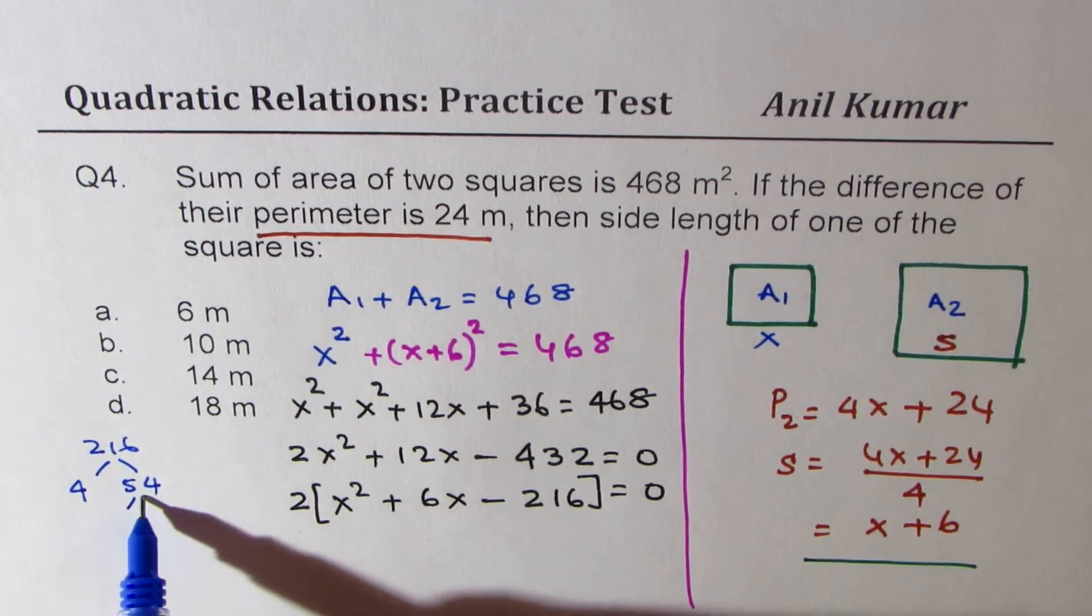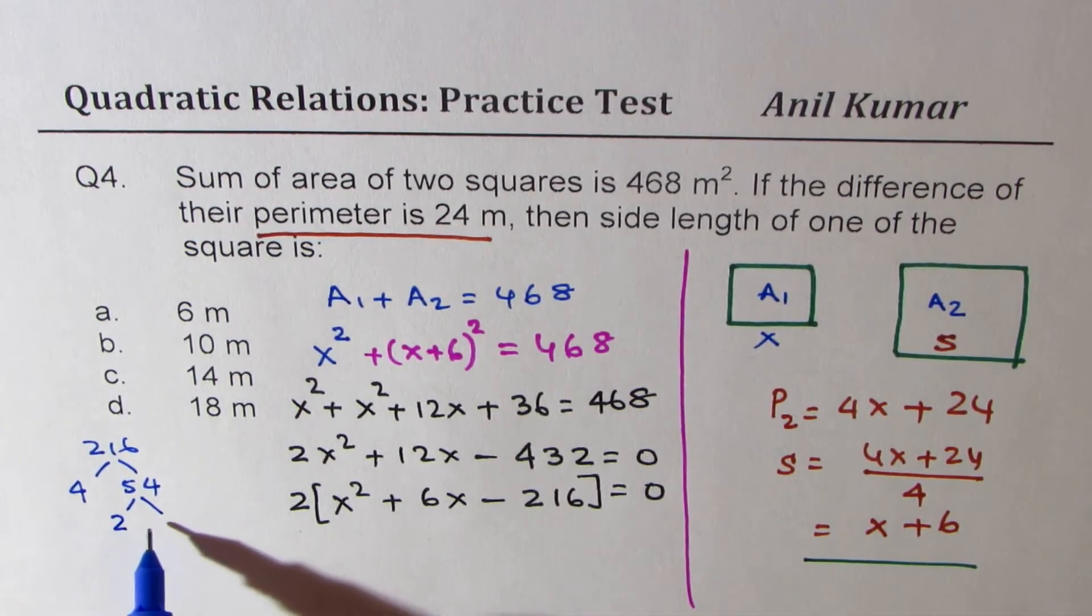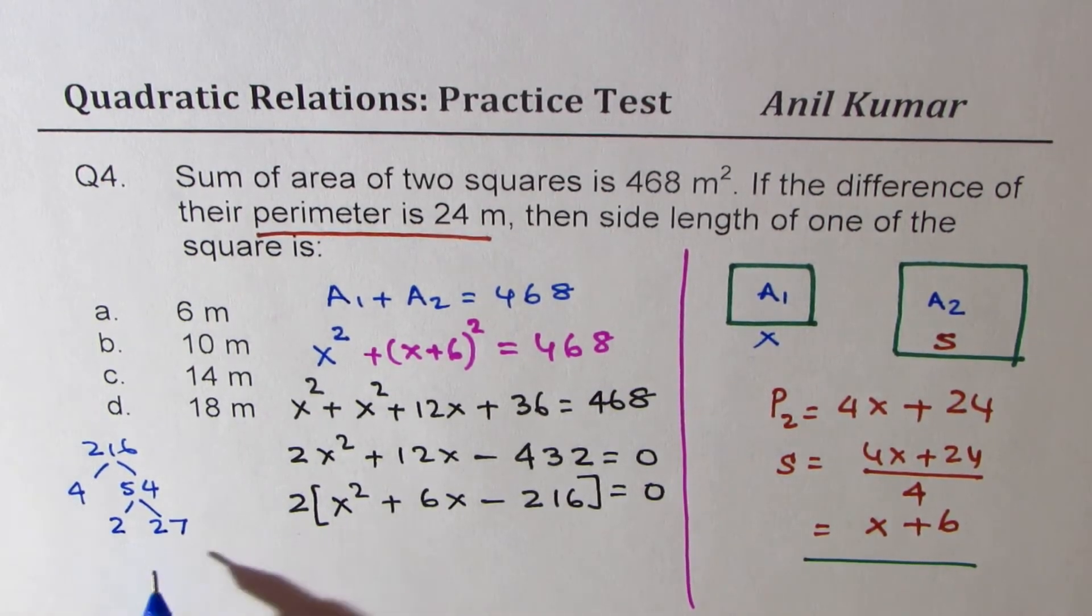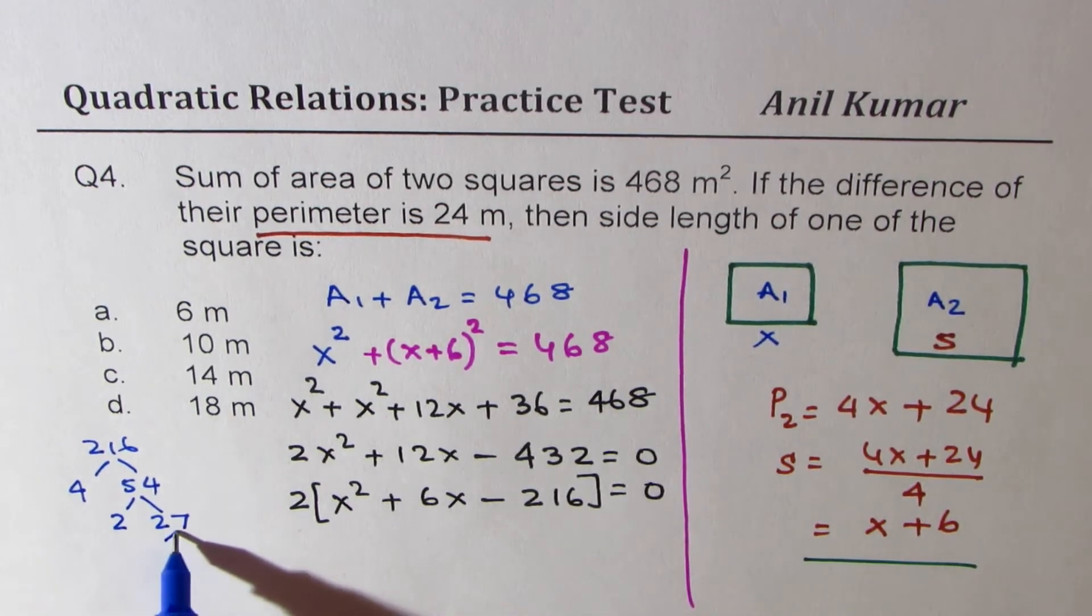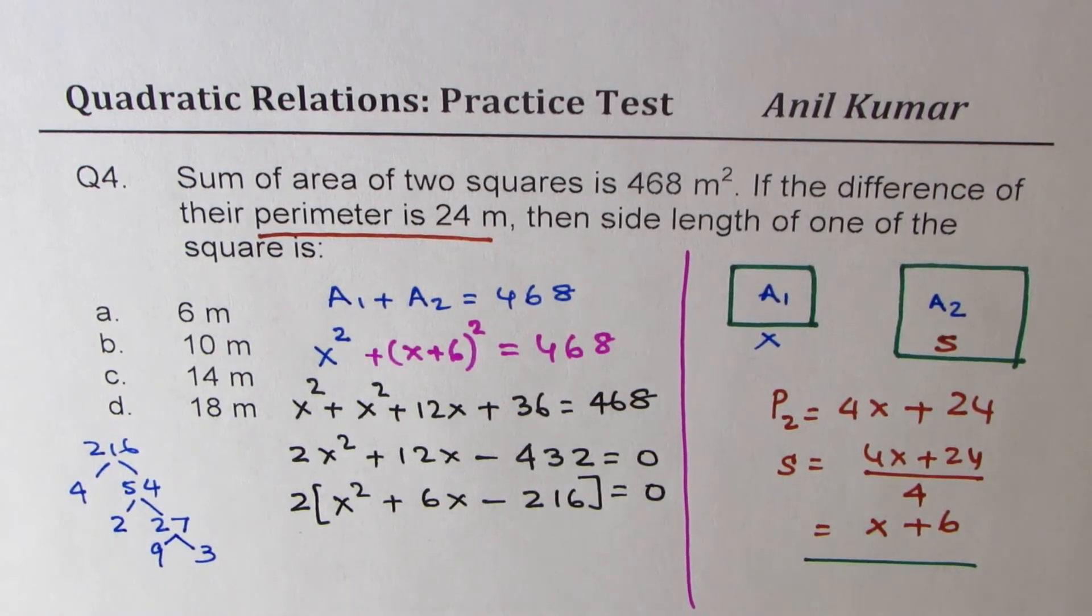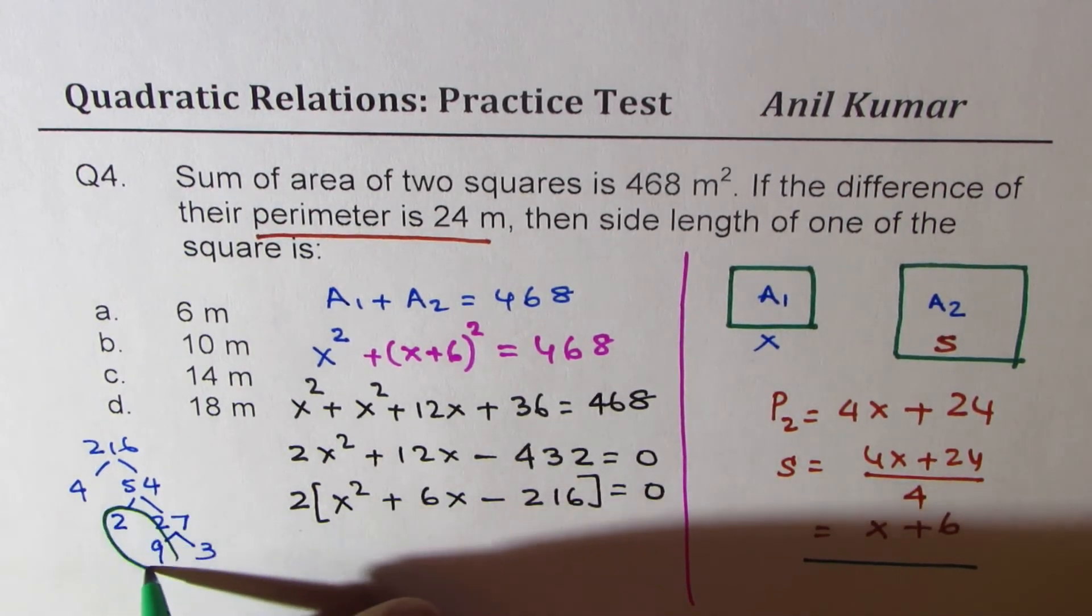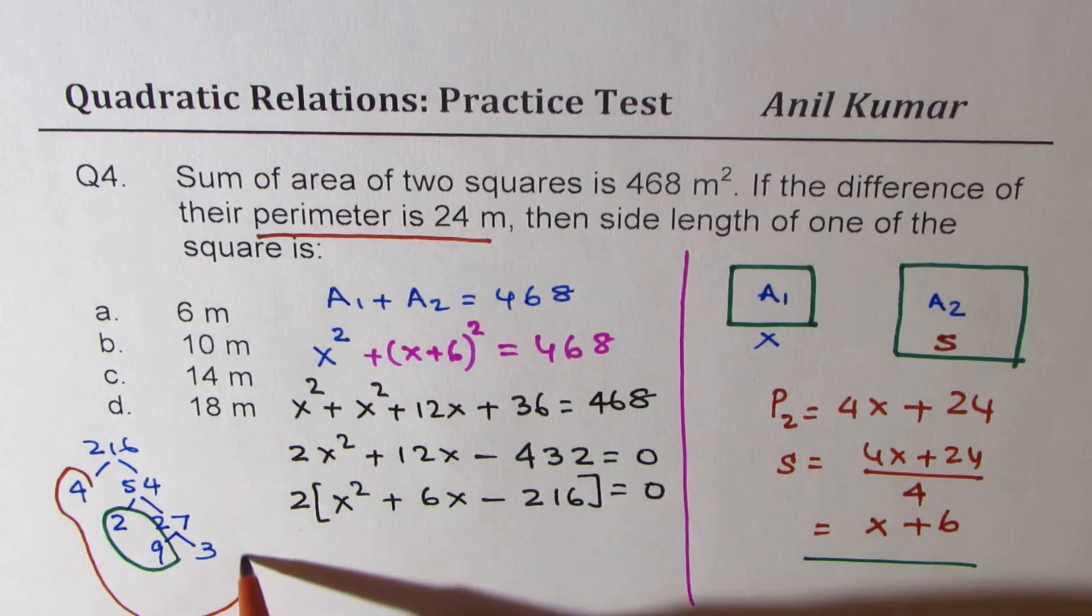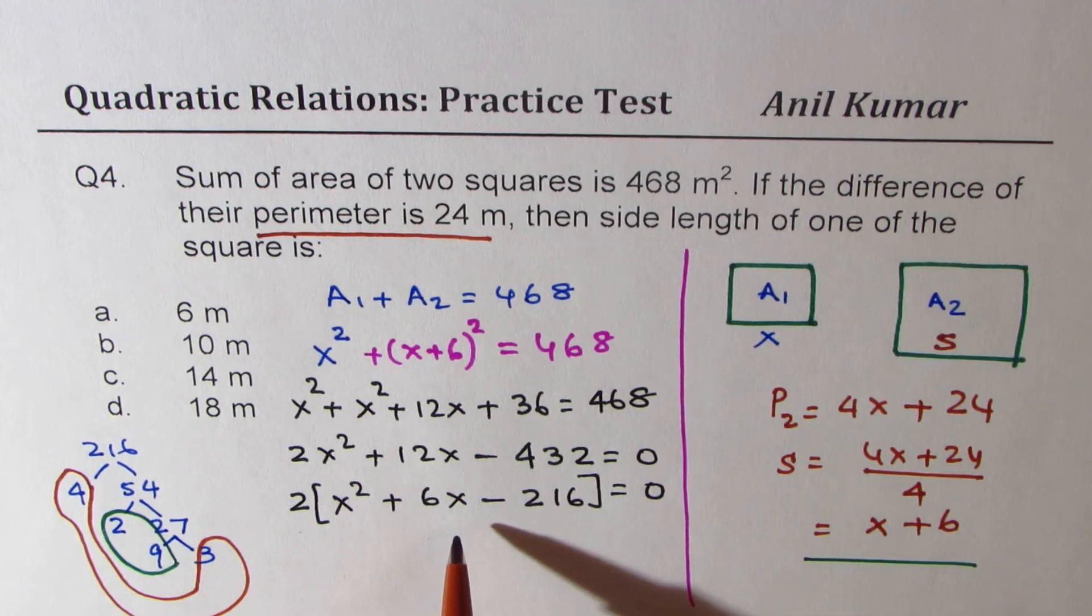Now 54, we could divide this by, let's say 2. So if I divide by 2, 2 times 2 is 4, we get 27. Now we are looking for difference of two numbers to be 6. Now that doesn't give you. So 9 times 3 is 27. So now we could combine 9 and 2 which gives us 18 and 4 and 3 which gives us 12.